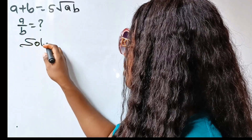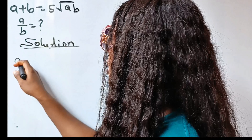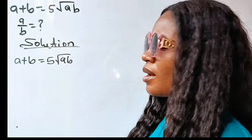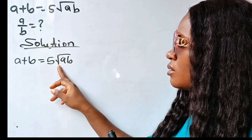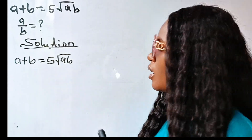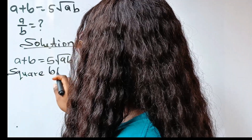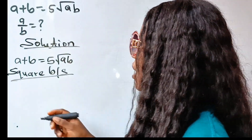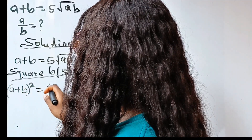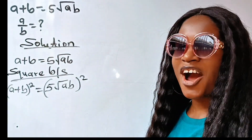Now, solution. We have that A plus B is equal to 5 square root of AB. Because of this square root sign, we need to square both sides — not to remove the root sign, but to work with it. So we have A plus B squared is equal to 5 root AB, all squared.